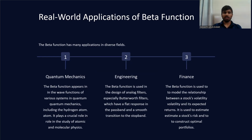The first wide application of the beta function is quantum mechanics, where it appears in the wave functions of various systems, including the hydrogen atom, and plays a crucial role in atomic and molecular physics. In engineering, the beta function is used in the design of analog filters, especially Butterworth filters, which have a flat response in the passband and a smooth transition to the stopband. In finance, it is used to model the relationship between a stock's volatility and its expected returns, helping estimate risk and construct an optimal portfolio.